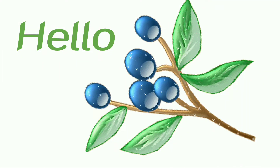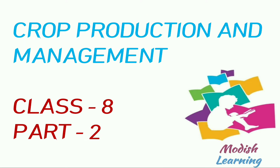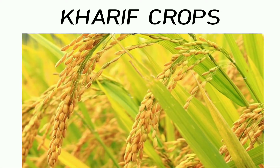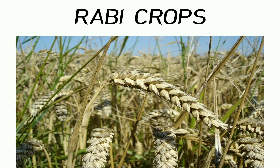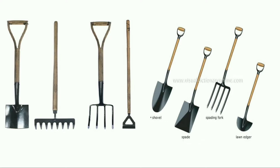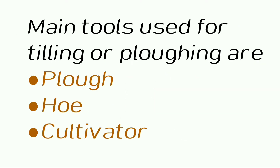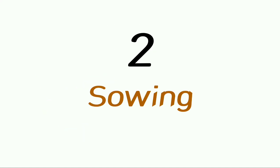Hello everyone, hope you all are doing well. In today's video, let us continue with the next part of the lesson: crop production and management. In the previous video we had studied about different types of crops — kharif crops, for example paddy, and rabi crops, for example wheat. We had also studied that tilling or plowing is done with the help of various tools such as plow, hoe, and cultivator. In today's video, let us study about the second agricultural practice, that is sowing.